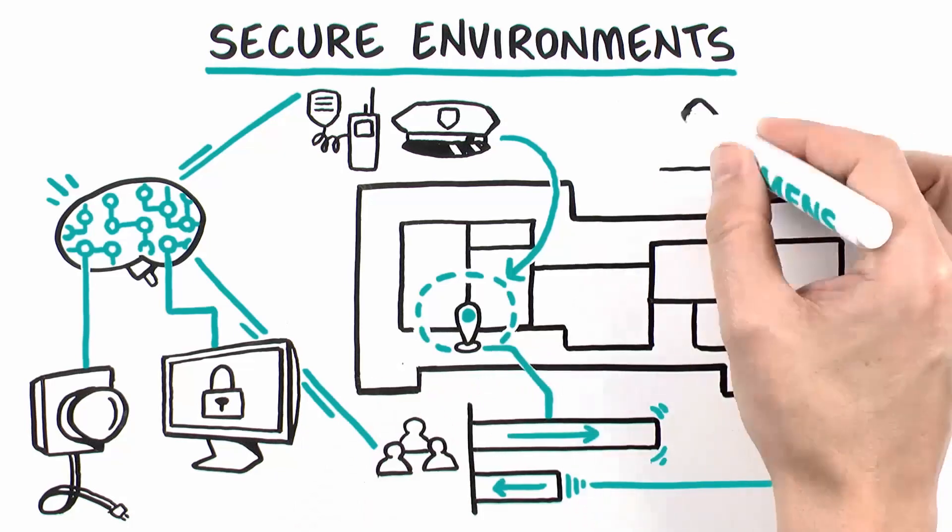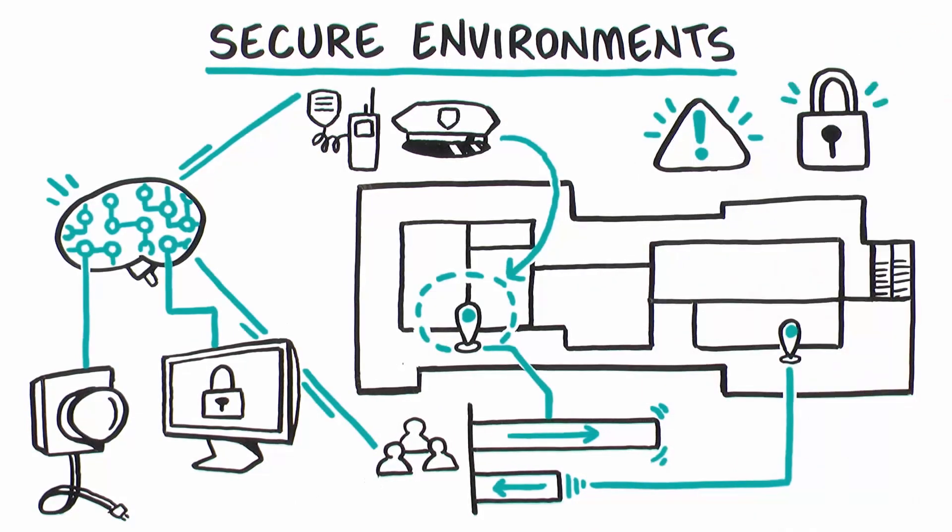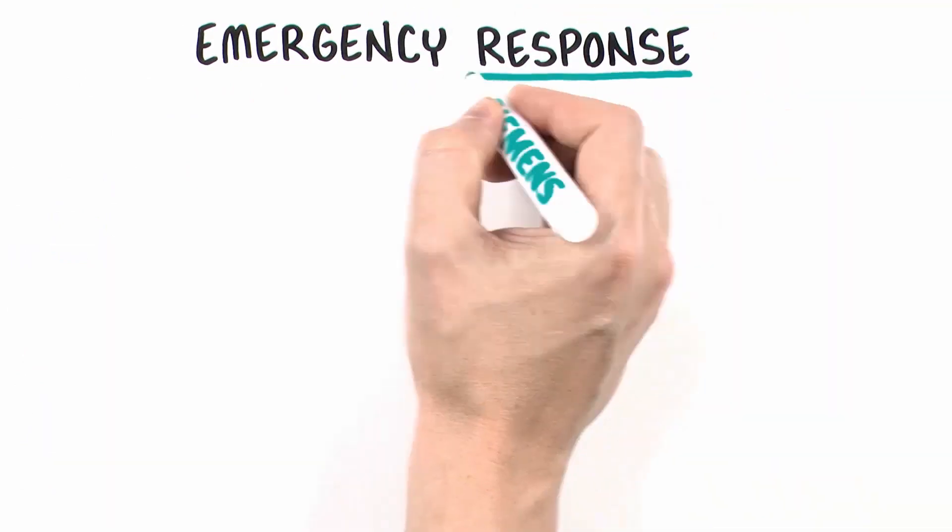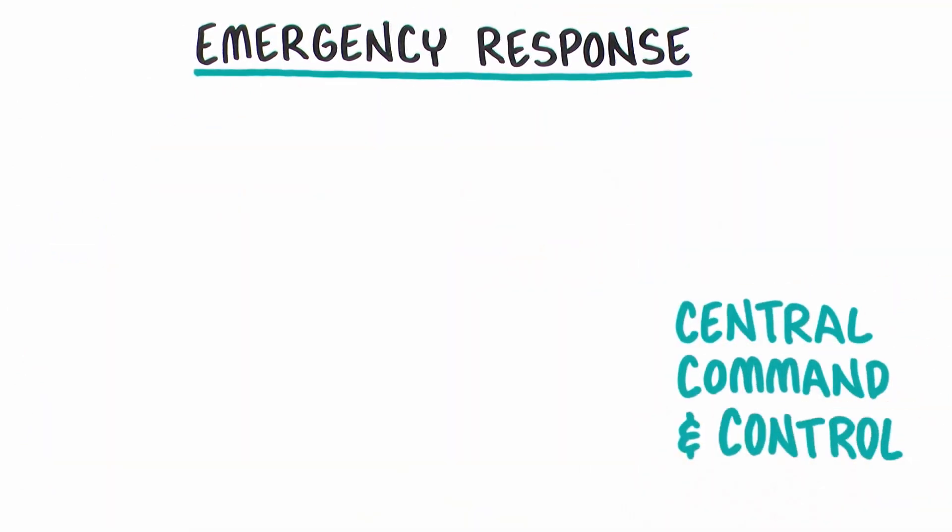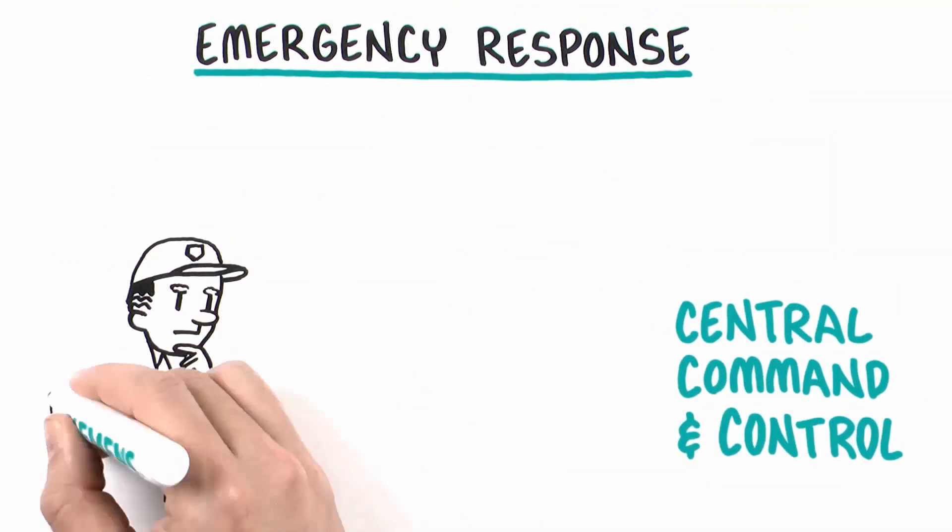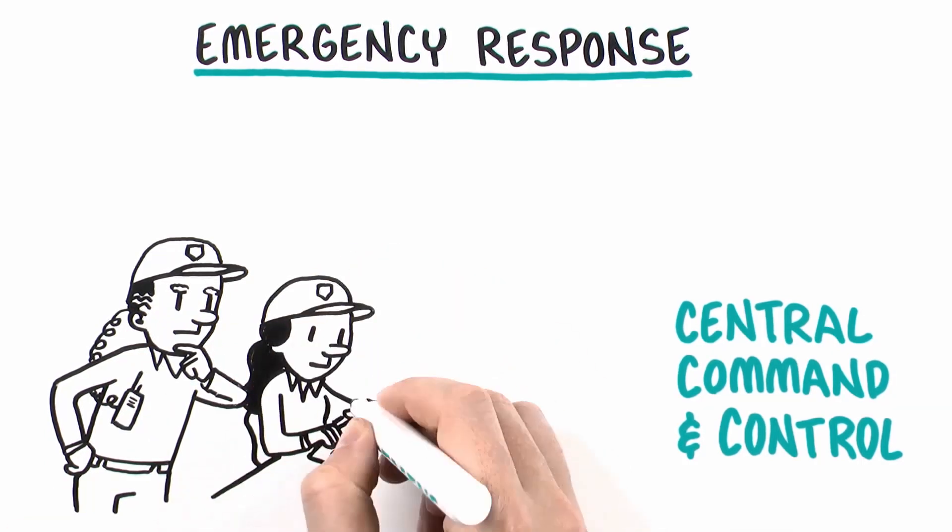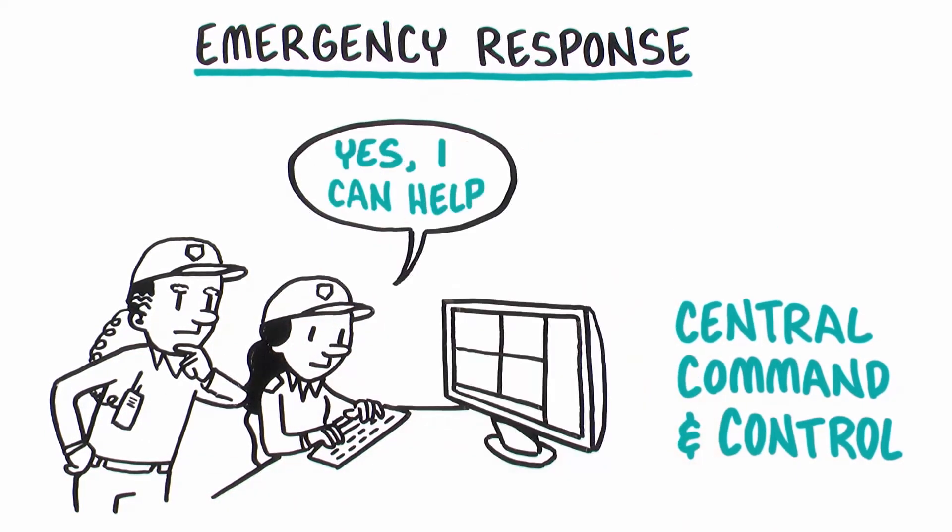Security personnel can be alerted and doors locked if security events are detected. Emergency Response: Centralized command and control lets security personnel quickly bring up video feed from targeted zones to see what's happening and support first responders.